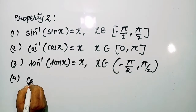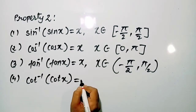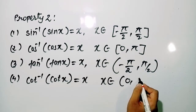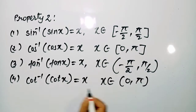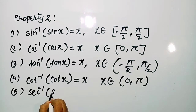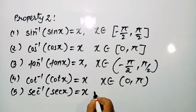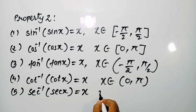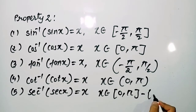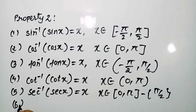Fourth, cot⁻¹(cot x) = x, where x belongs to the open interval (0, π). Fifth, sec⁻¹(sec x) = x, where x belongs to the open interval (0, π) excluding π/2.